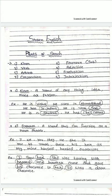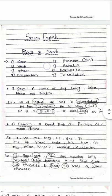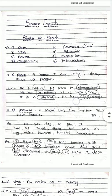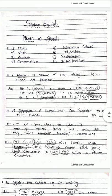Let us start from the noun. The definition of noun: a name of anything, idea, place, or a person. Noun ka matlab hai — kisi bhi cheez ka, kisi bhi idea ka, kisi bhi insaan ka naam — the name of any thing, idea, or person. In new videos I will have a separate video for nouns and types of nouns, but here let us get a basic idea of what a noun is.